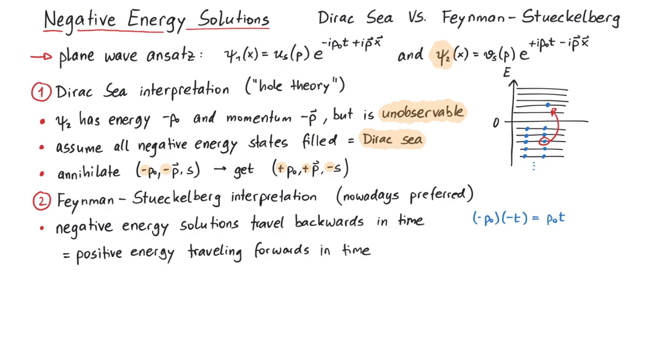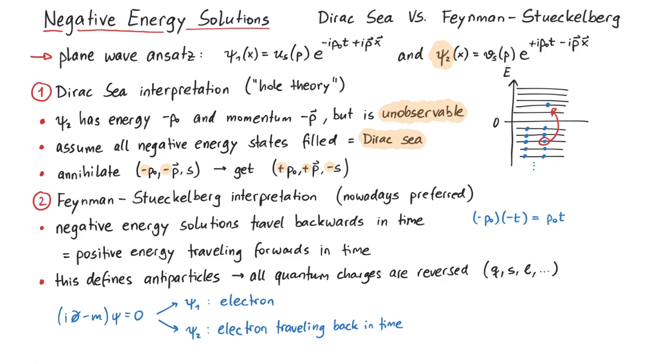We now define these states to be antiparticles. This means that all quantum charges are reversed, so for example electric charge, spin, lepton number, and so on. Imagine we want to describe an electron using the Dirac equation. Psi_1 describes a usual electron, and psi_2 describes an electron traveling backwards in time. Since mathematically a simultaneous flip of energy and time does not change anything, we define an antiparticle as a particle traveling backwards in time having flipped quantum charges.